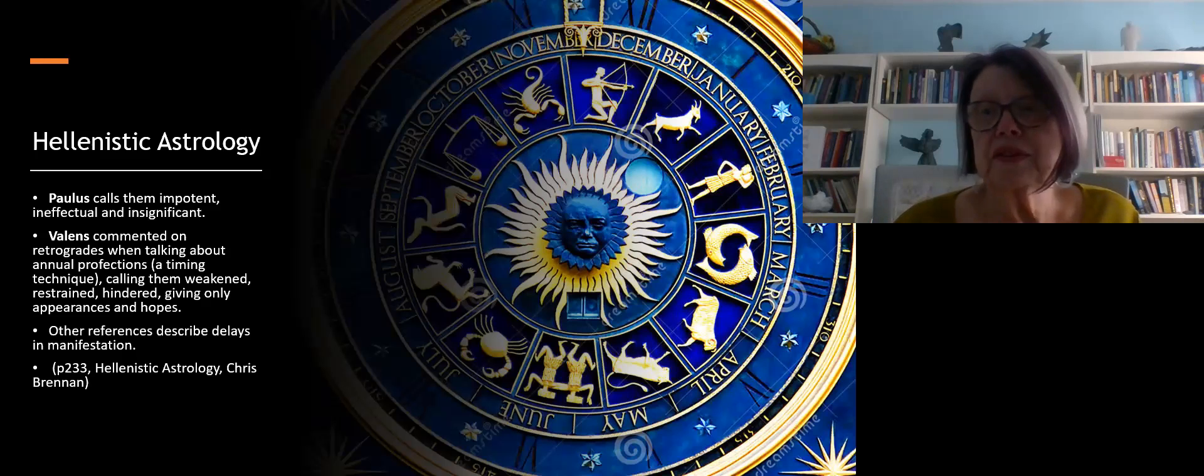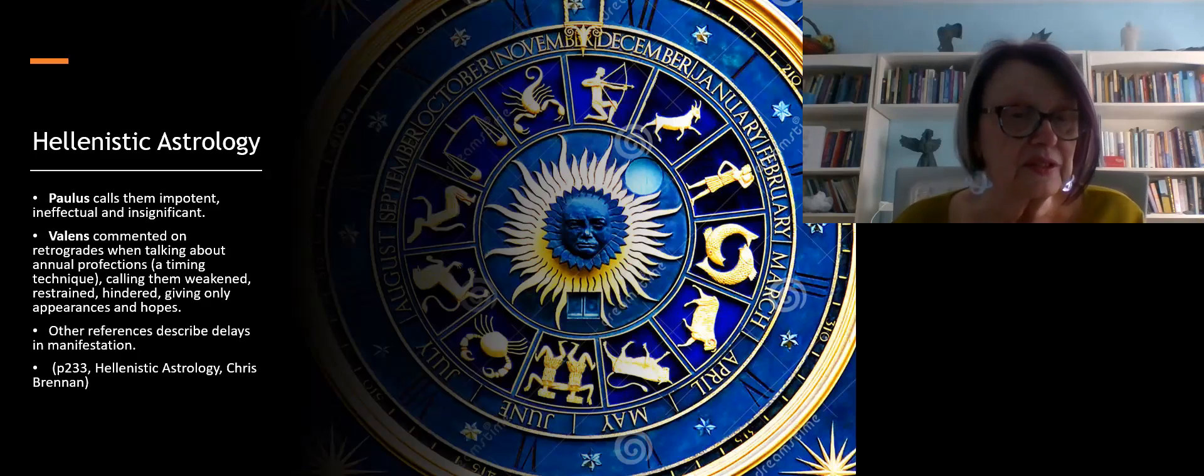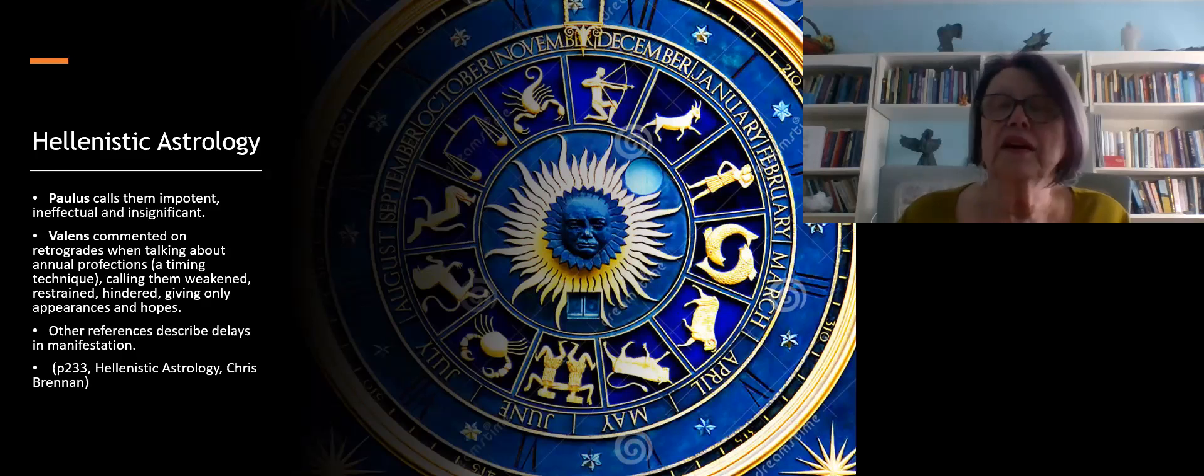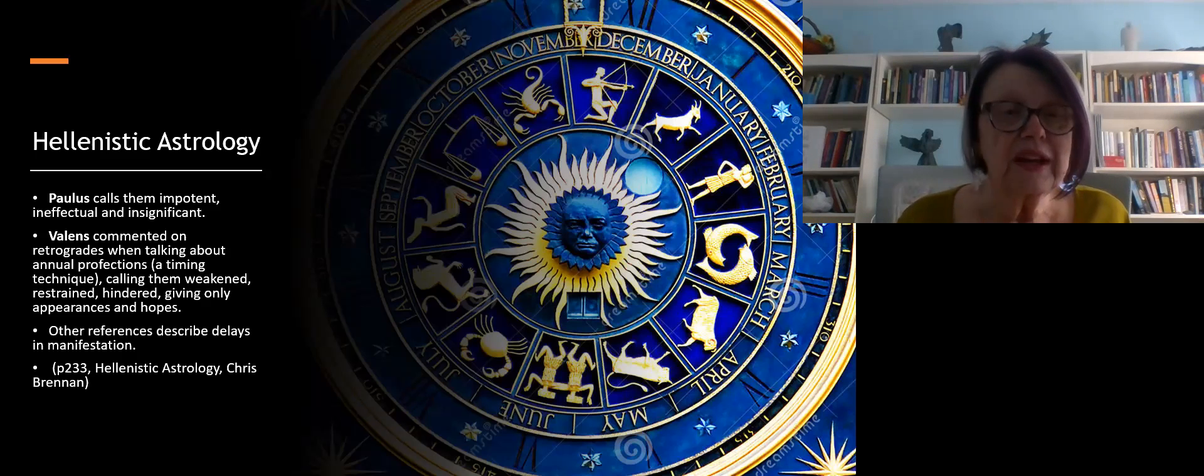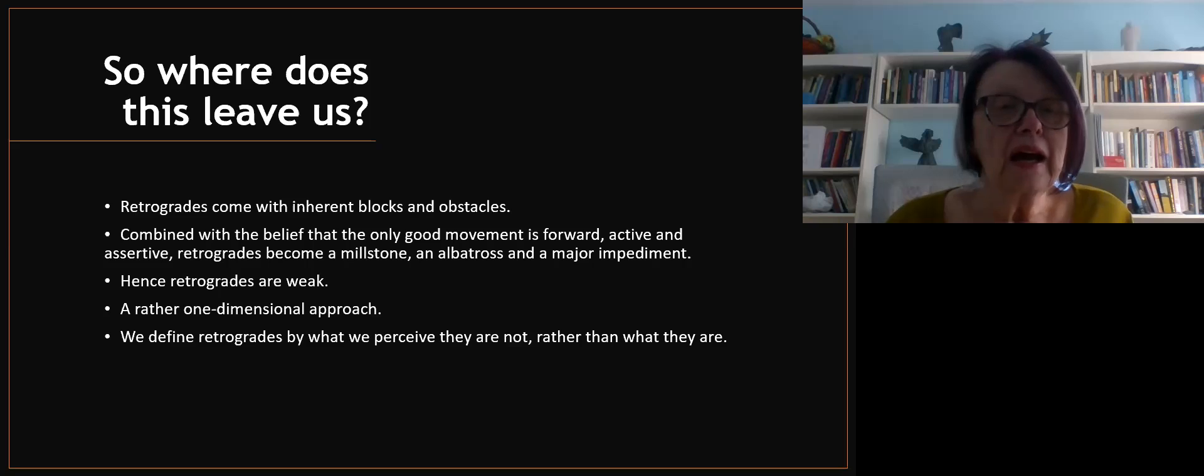According to William Lilly, retrograde planets will be riotous and vulgar when not well posited. Other words he uses include delays, recurrences, returns to previous conditions, reversal of events. In Hellenistic astrology, this information comes from Chris Brennan's book, Paulus calls them impotent, ineffectual, and insignificant. Valens commented on retrogrades calling them weakened, restrained, hindered, and giving only appearances and hopes. Other references describe delays in manifestation.